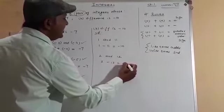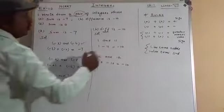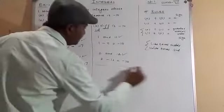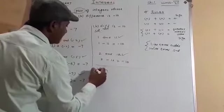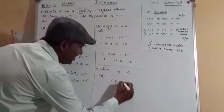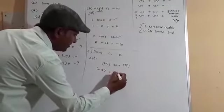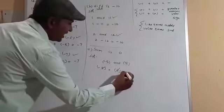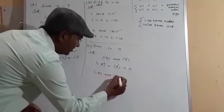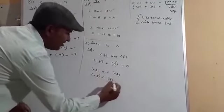For part (c), sum is 0. You can take -5 and +5. -5 + 5 = 0. They cancel out. Similarly, you can take -3 and +3. -3 + 3 = 0.